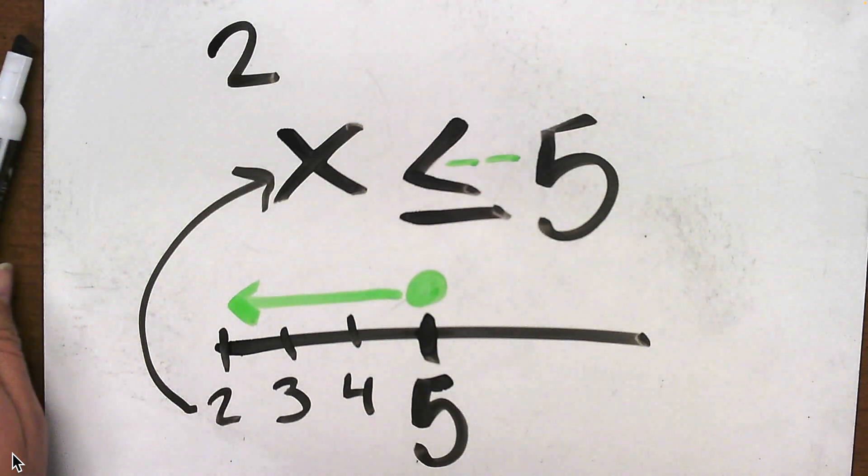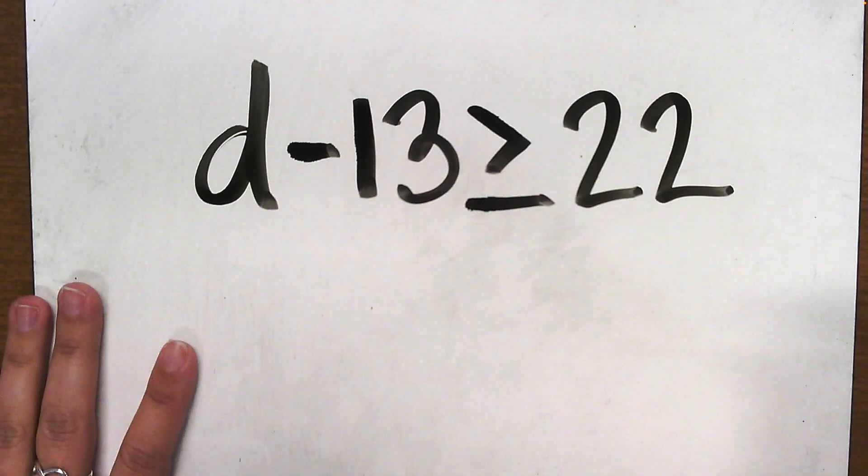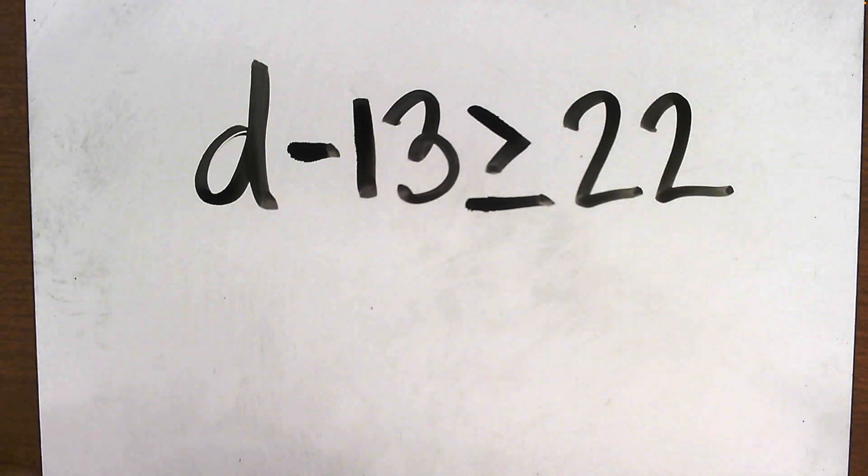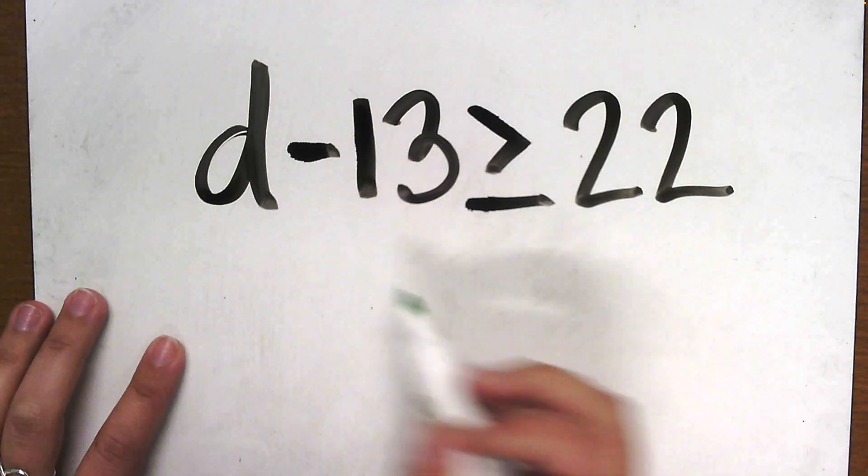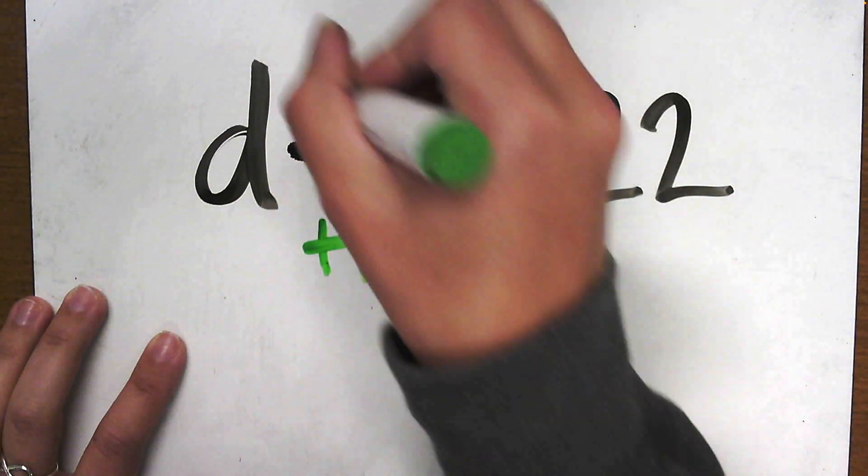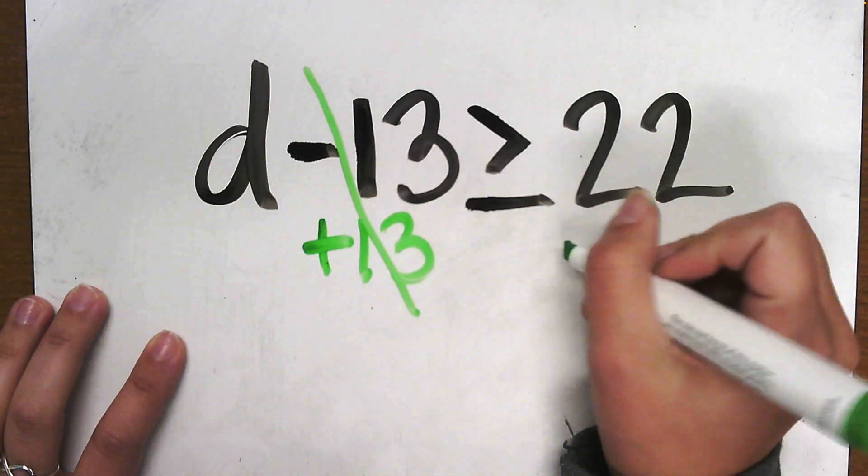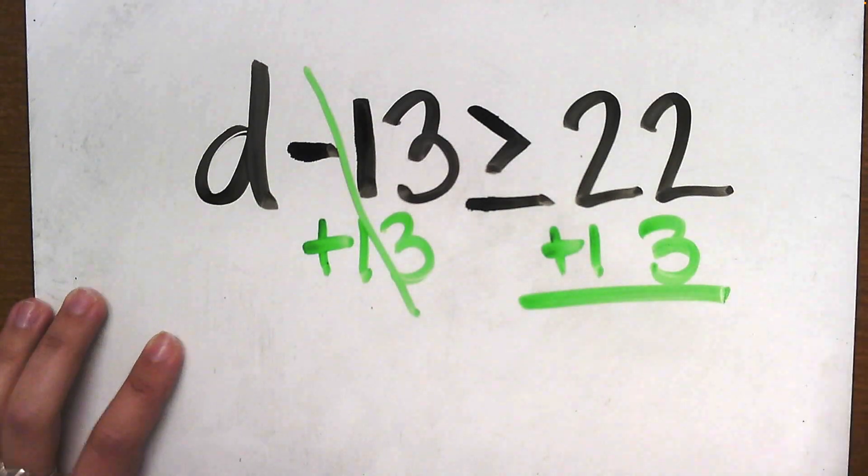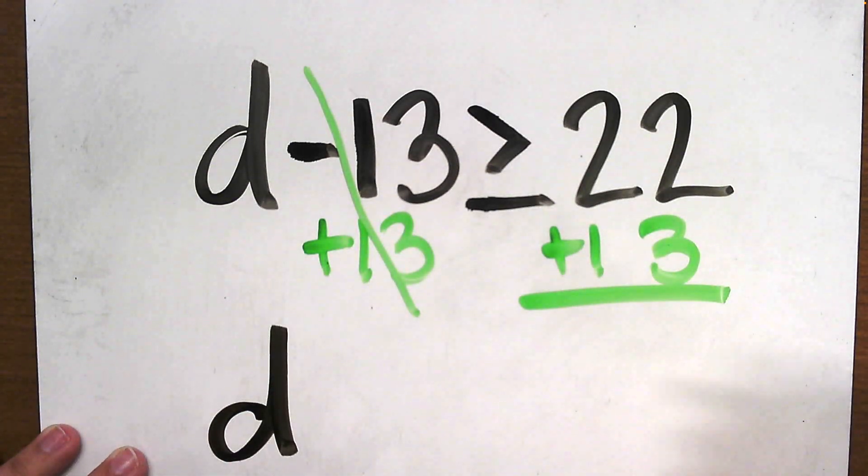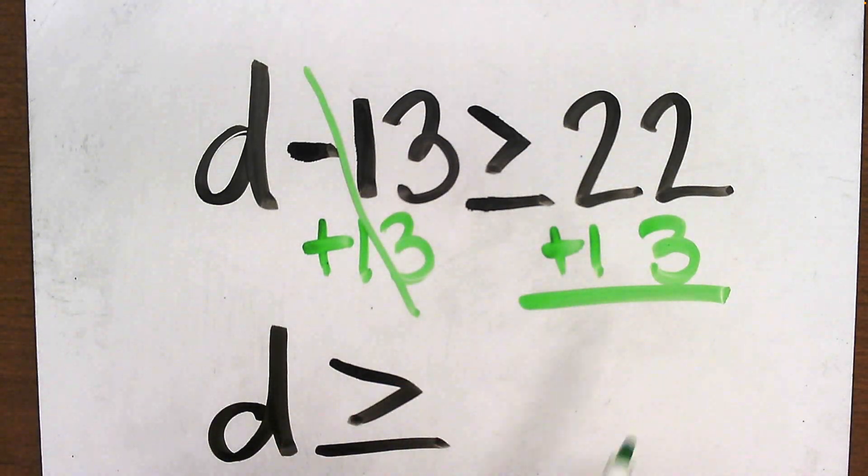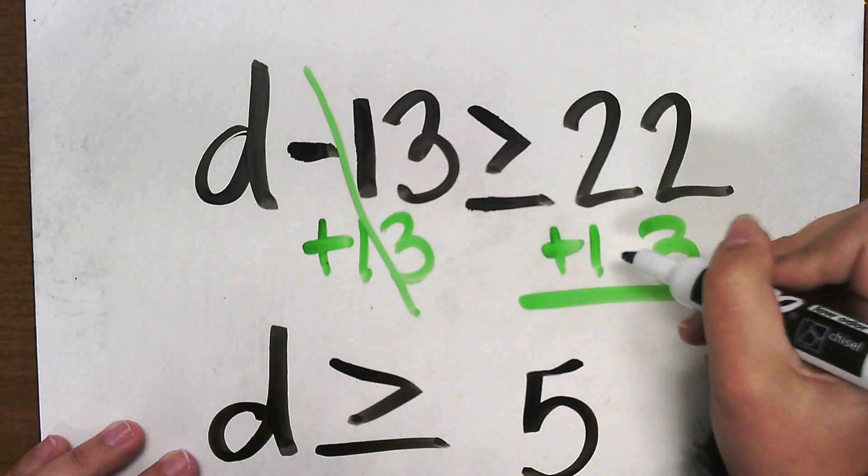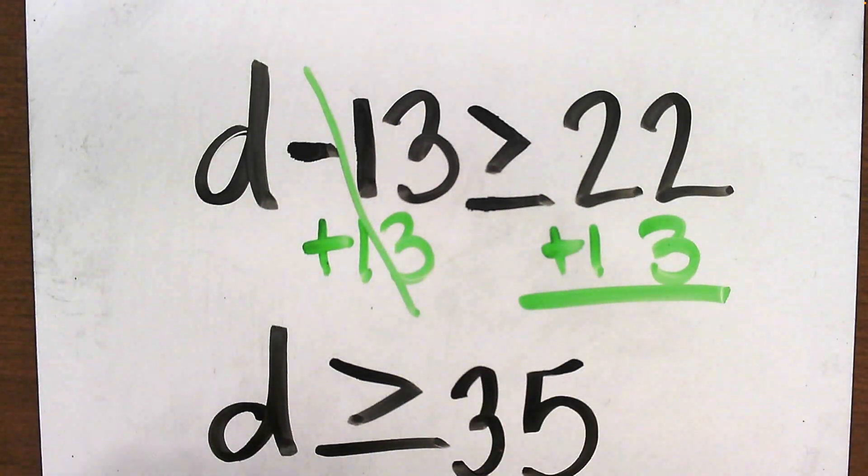Now, what do I do if I have something connected to our variable? d minus 13 is greater than or equal to 22. I need to get this variable by itself, so I'm going to go ahead and do the inverse operation. Instead of minus 13, I'm going to plus 13, which cancels this side out. But what I do to one side, I must do to the other. Now I'm going to bring down the d, and I keep my symbol the same, and now I solve for my new problem. What is 3 plus 2? That is 5. 1 plus 2 is 3. So this is my new equation.